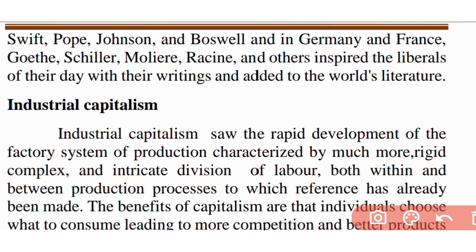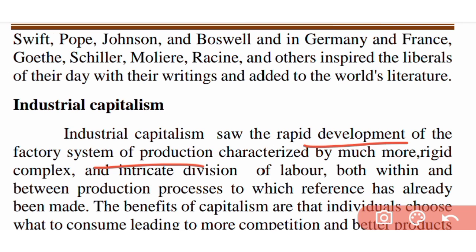Industrial capitalism involved the rapid development of the factory system of production, characterized by a much more rigid, complex, and intricate division of labor, both within and between production processes. The benefits of capitalism include individuals choosing what to consume, leading to more competition.